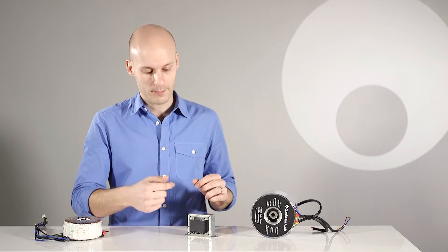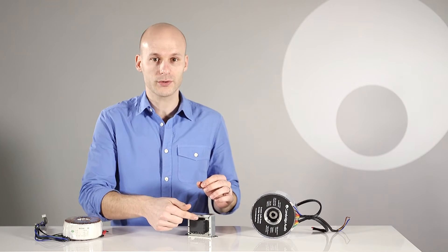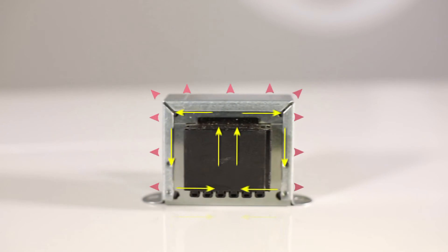With an EI transformer, magnetic flux flows around the transformer's core, but electromagnetic interference is given off, which interferes with other internal components, causing audio distortion and degrading the sound quality.